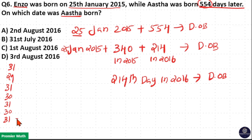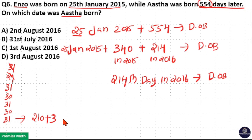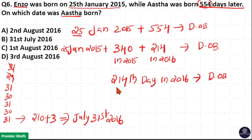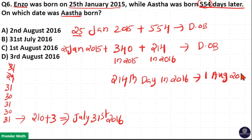So 7 months means 30 into 7 is 210, plus 1 plus 1 plus 1 plus 1 plus 1 plus 1 plus 3 equals 213. So the 214th day is July 31st, plus 1, that is 1st August 2016. So option C is the answer.